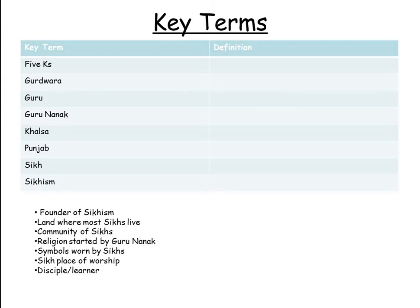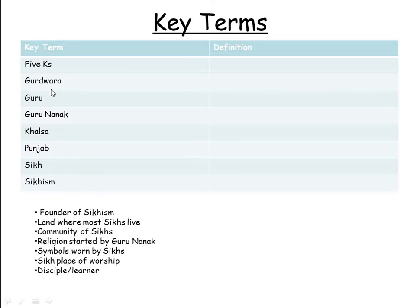Like the previous lessons, if you download and save this PowerPoint onto your device, you'll be able to write directly on it. You've got some answers here to fill in for the key terms. That's just a little recap from what we've already done, although the 5Ks we haven't done yet. So do as many of the others as you can and then see which one the 5Ks is.